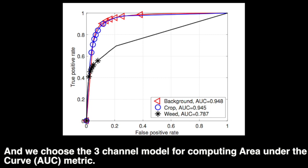For the three-channel model, we also consider the AUC metric for quantitative evaluation, as shown in the figure. There are small performance variations compared to the F1 score. However, as these measures capture different classifier properties, they cannot be directly compared.